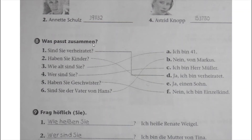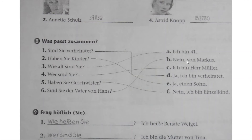Number eight: 'Was passt zusammen?' - that means match the following. Sind Sie verheiratet? - Ja, ich bin verheiratet. Haben Sie Kinder? - Ja, einen Sohn. Wie alt sind Sie? - Ich bin vierundvierzig. Wer sind Sie? - Ich bin Herr Müller. Haben Sie Geschwister? - Nein, ich bin Einzelkind. Sind Sie der Vater von Hans? - Nein, von Markus.